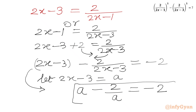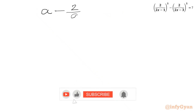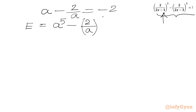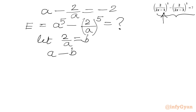Our required expression E, written in terms of A with 2x - 3 replaced by A, is A⁵ - (2/A)⁵. Let's say 2/A = B, so our first equation becomes A - B = -2, and from AB = 2 we have our second relation.